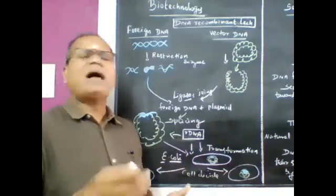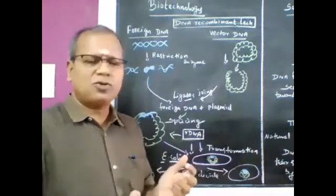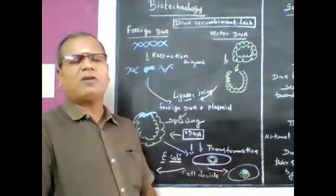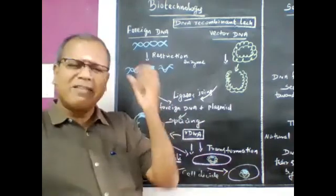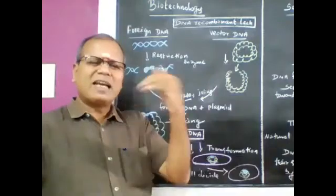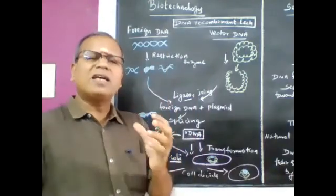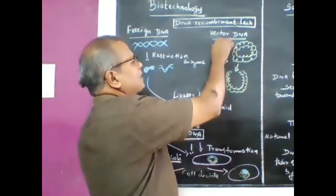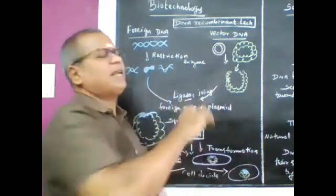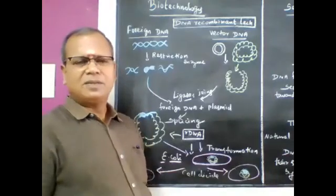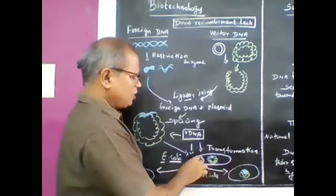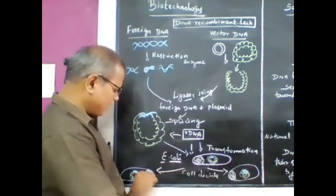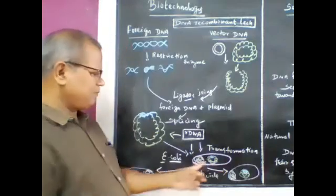Examples of hosts include Bacillus, Streptomyces, and Saccharomyces cerevisiae. For example, bacteria can act as a host. The vector is generally a plasmid or bacteriophage. The non-genomic, extra-circular DNA present in the cytoplasm of bacteria is said to be a plasmid.